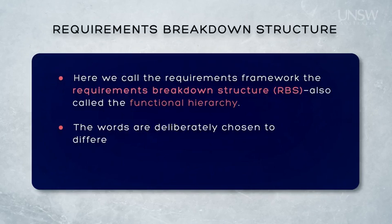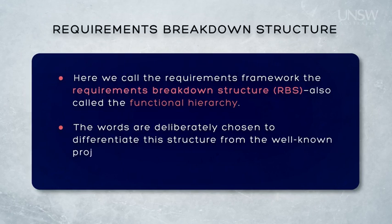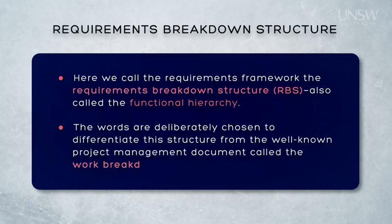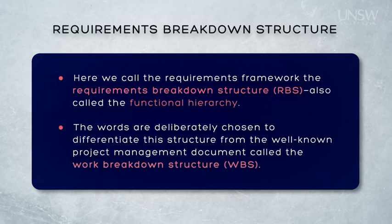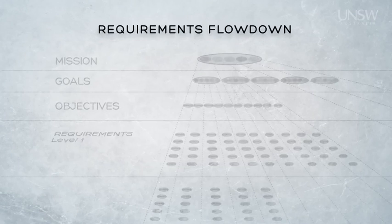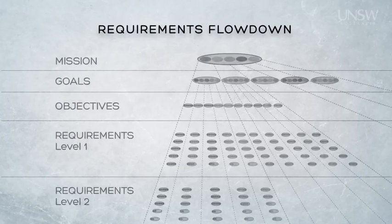The words are chosen very carefully to differentiate this structure from the well-known project management document called the work breakdown structure, or the WBS. The RBS is grouped logically, while the WBS is structured physically into a group of physical work packages for the configuration items that need to be developed. At the end of preliminary design, the logical groupings of the RBS are mapped or allocated into the physical groupings in the WBS. The principal benefit of the functional hierarchy is it provides a useful framework within which we can develop requirements and later trace them — a process often called requirements flow down.